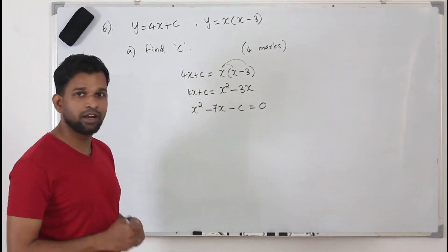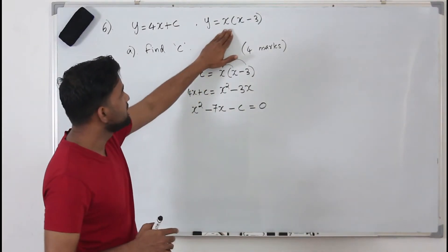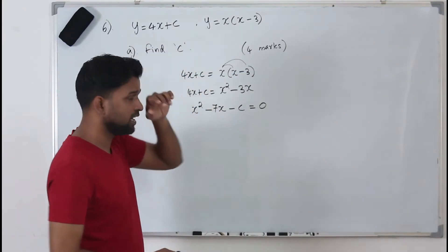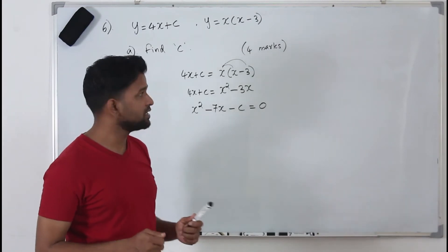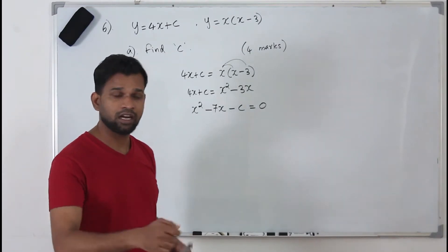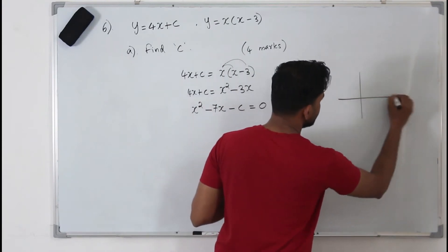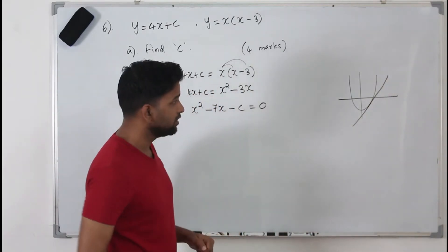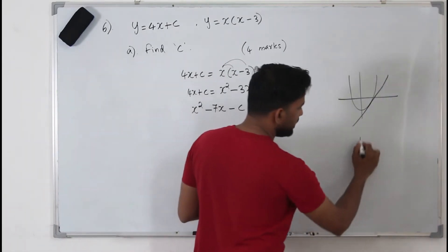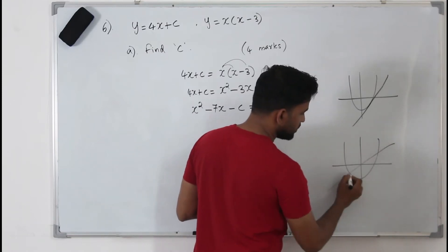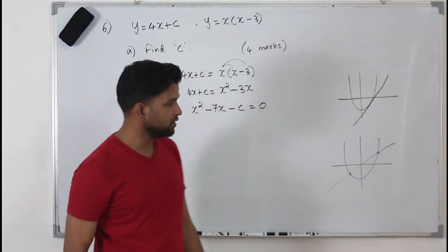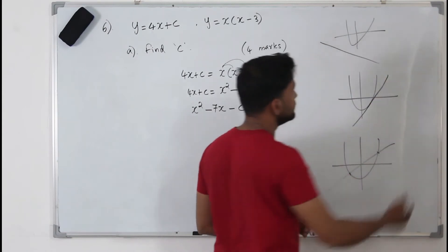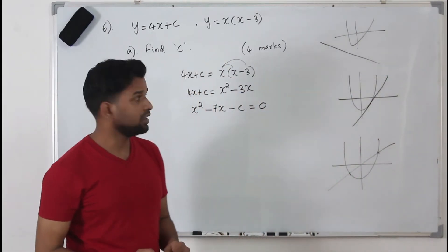Why do we use the discriminant? The curve x squared minus 3x is a parabola and y equals 4x plus c is a straight line. When we consider the intersection of a straight line and a parabola, there are three cases: the line may just touch the parabola at exactly one point; it might pass through the parabola intercepting at two points; or it may never touch the parabola at all.